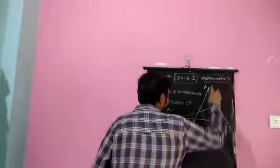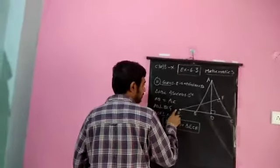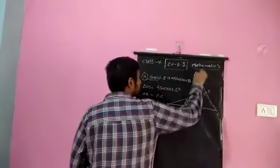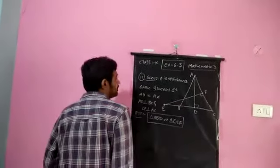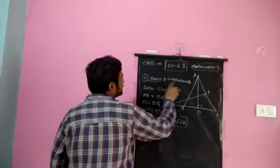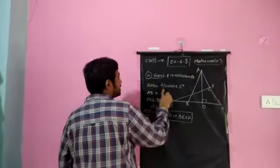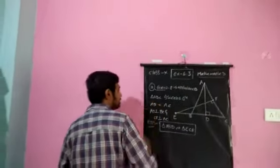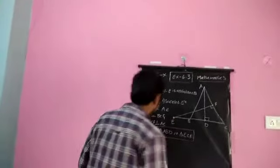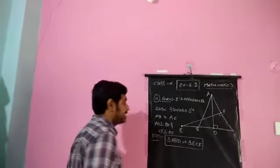This is the diagram given, in which triangle ABC has CB extended to a point E. AD is perpendicular to BC and EF is perpendicular to EC. Triangle ABC is an isosceles triangle in which AB equals AC, and we need to prove that triangle ABD is similar to triangle ECF.